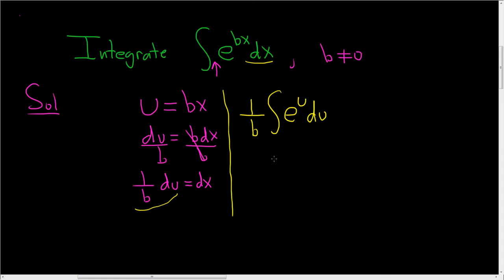The integral of e to the u is simply e to the u, so this is 1 over b e to the u. But u was bx, plus c. And that is the final answer.